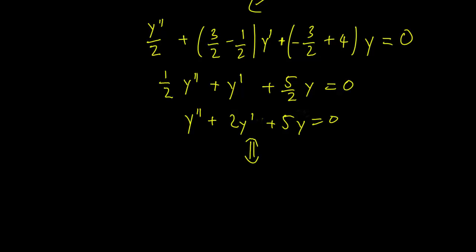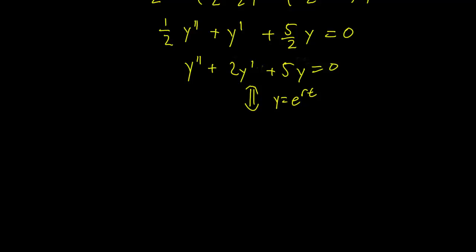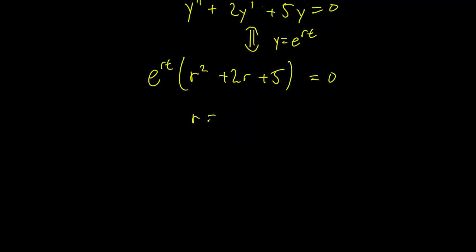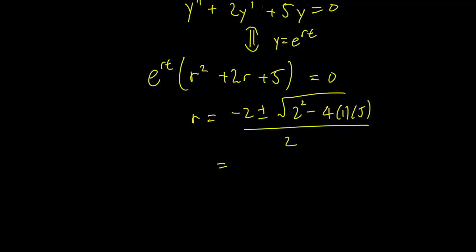Now we make the usual substitution y equals e^{rt}, and what we get is r squared plus 2r plus 5 times e^{rt} equals 0. So we need this quadratic to equal 0. Using the quadratic formula, r equals negative 2 plus or minus the square root of 2 squared minus 4 times 1 times 5, all over 2.